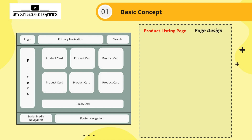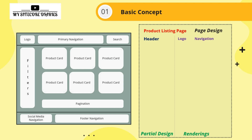The way we create this structure in Sitecore SXA is called a page design. Within the page design, you have partial designs. For example, the header section is a partial design — it might have one row with three columns: logo, primary navigation, and search. The components placed inside — like the logo, navigation, and search — are called renderings.